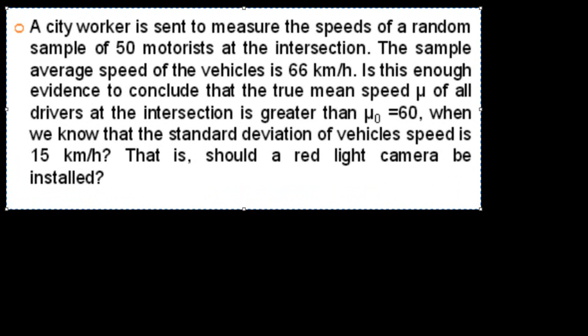A city worker is sent to measure the speeds of a random sample of 50 motorists at the intersection. The sample average speed of the vehicles is 66 kilometers an hour. Is this enough evidence to conclude that the true mean speed, mu, of all the drivers at the intersection is greater than the supposed null hypothesis of 60 when we know that the standard deviation of vehicles speed is 15 kilometers an hour? That is, should a red light camera be installed?